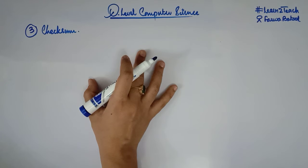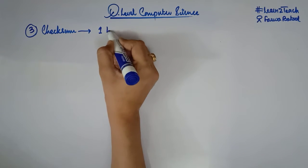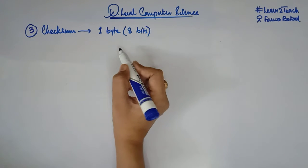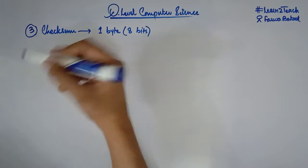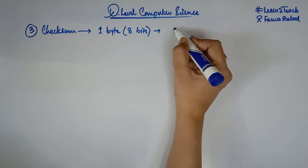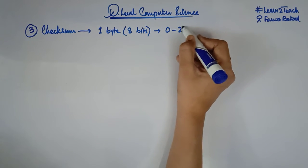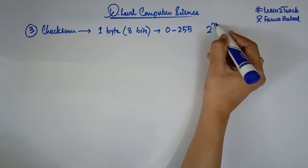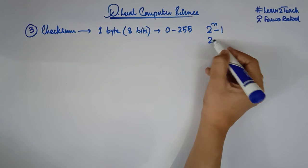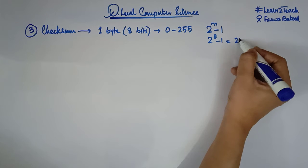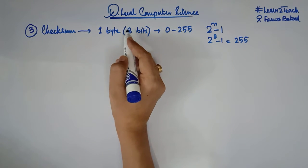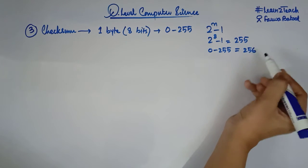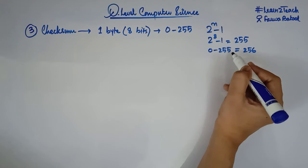Let's suppose my checksum is of 1 byte, which equals 8 bits. The maximum value that can be stored in 1 byte is a range from 0 to 255. We calculate this range using the formula 2 raised to the power n minus 1, where n is the number of bits. For 1 byte that is 8 bits, 2 to the power 8 minus 1 gives us 255, so the total numbers we have are 256.